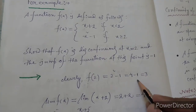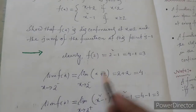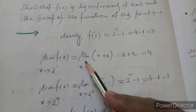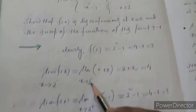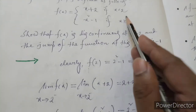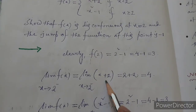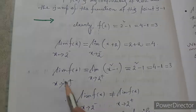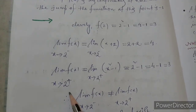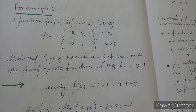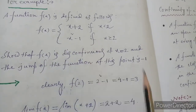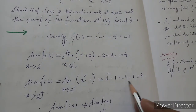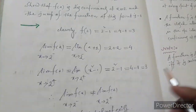So f(2) equals 2 squared minus 1, that is 4 minus 1, equal to 3. The left-hand limit as x tends to 2 minus: since x is less than 2, f(x) equals x plus 2, so 2 plus 2 equals 4. The right-hand limit as x tends to 2 plus: since x is greater than 2, f(x) equals x squared minus 1, so 2 squared minus 1 equals 3.